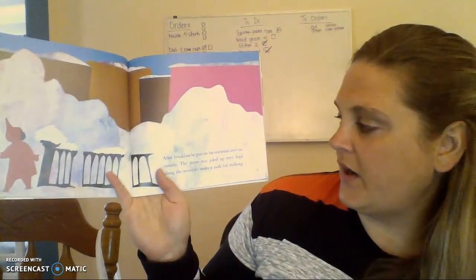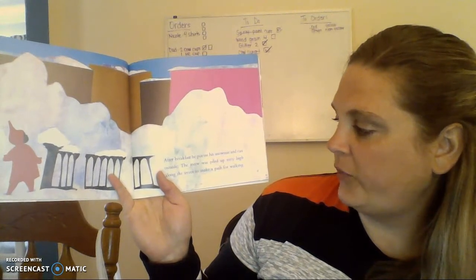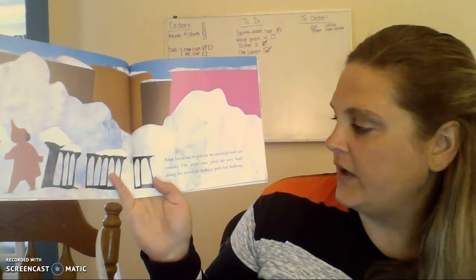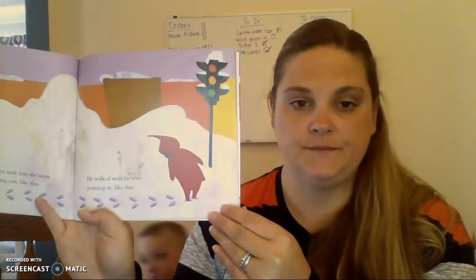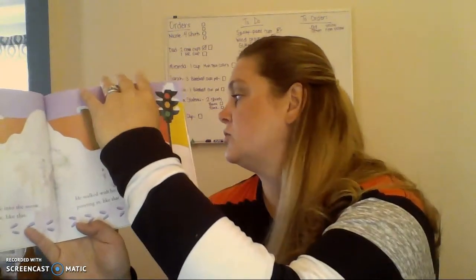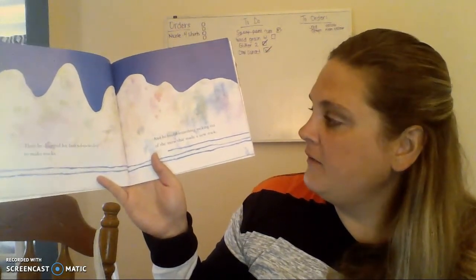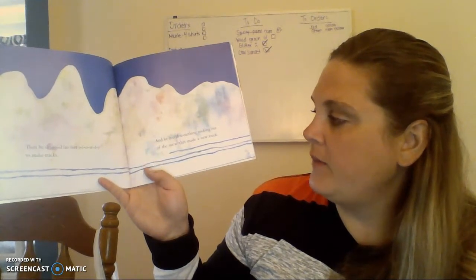It covered everything as far as he could see. After breakfast he put on his snow suit and ran outside. The snow was piled up very high along the street to make a path for walking. Crunch, crunch, crunch — his feet sank into the snow. He walked with his toes pointing out like this, and he walked with his toes pointing in like that. Then he dragged his feet slowly to make tracks, and he found something sticking out of the snow that made a new track.